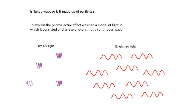Look at this dim ultraviolet light — not very many photons, but each one has got a high frequency, so it's got lots of energy. Bright red light has lots of photons because it's bright, but each one has a lower frequency, so less energy. So light made up of particles — we can think of it, to explain the photoelectric effect, as being in little discrete packets.